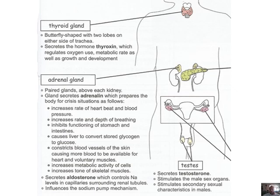That chunk about adrenaline is extremely important — write it down with the little bits and pieces discussed. Also, when it says the liver converts stored glycogen to glucose, make a side note to relate that to the pancreas. Finally, the adrenal glands secrete aldosterone, which controls sodium levels in capillaries surrounding renal tubules and influences the sodium pump mechanism. By moving sodium around via osmosis, you move water, so you can change how water moves through the kidneys.